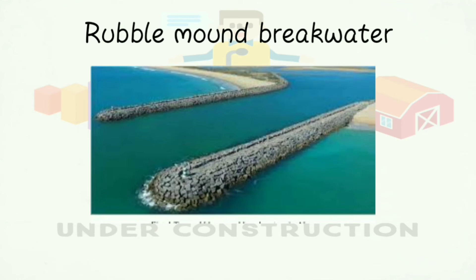A breakwater is constructed by a heterogeneous assembly of natural rubble or uncut stone. When the water depth is large, a rubber mound may be uneconomical due to the huge volume of rock required. Rubble mound breakwaters are built up to a water depth of 15 meters. They are not suitable when space is a problem, or if the harbour side is used for ship berthing, as a rubble mound breakwater with a sloping face is not suitable for berthing. These breakwaters dissipate inclined wave energy by forcing waves to break on the slope and do not produce significant wave reflection.